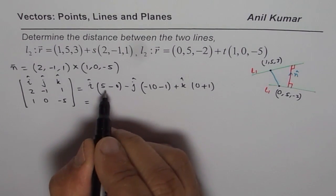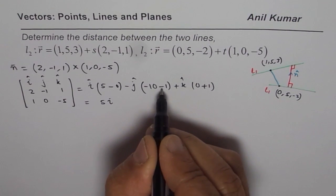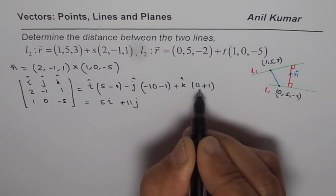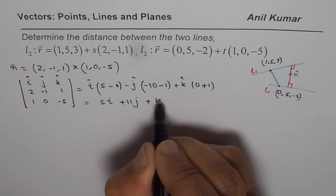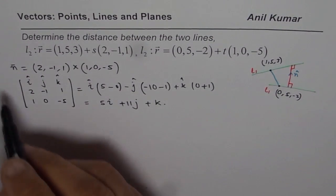So, I could write this as 5 minus 0 is 5i, minus and minus 11 plus 11j and we have k. So, that becomes the vector n.